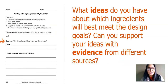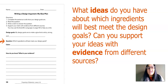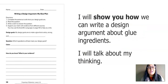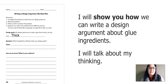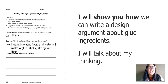We're going back to this worksheet. What ideas do you have about which ingredients will best meet the design goals? Can you support your ideas with evidence from different sources? I will show you how to write a design argument about glue ingredients and talk through my thinking as I fill out the worksheet. First, remember our design goals: to make a glue that is sticky, strong, and thick. Next, which ingredients will best meet your design goals? Here's mine: heated gelatin, flour, and water will make a glue sticky, strong, and thick.